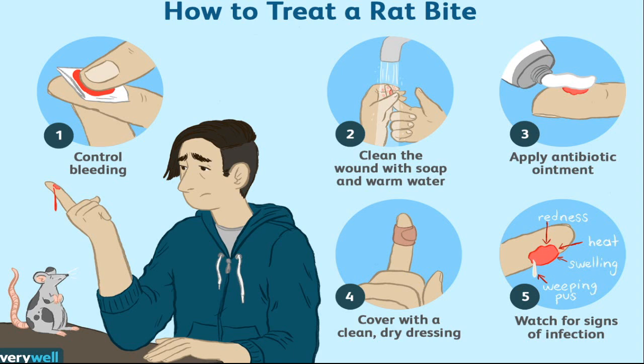Here is how to treat a rat bite step by step. Firstly, control bleeding. Secondly, clean the wound with soap and warm water. Thirdly, apply antibiotic ointment. Fourth, cover with a clean and dry dressing. Fifth, watch for signs of infection.